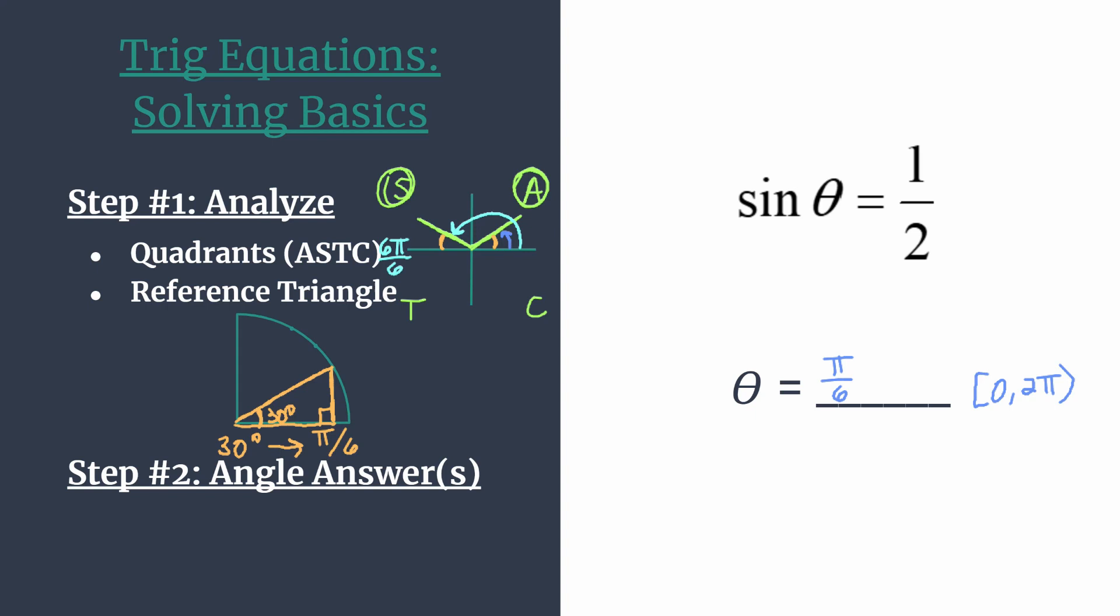But for now, let's go ahead and rewrite pi as 6 pi over 6, and we do that so it has a common denominator with that reference angle. Because to get to the actual angle in question, we rotated one pi over 6 less than pi. So all we have to do is subtract 6 pi over 6 minus one pi over 6, and that tells us our quadrant two angle answer is going to be 5 pi over 6.